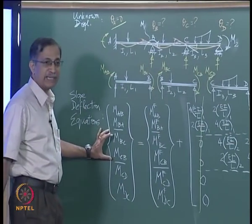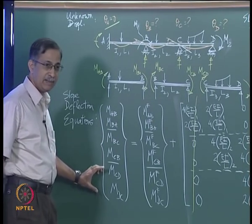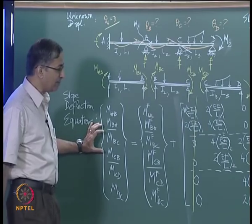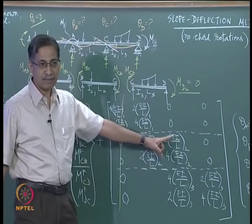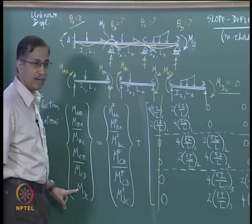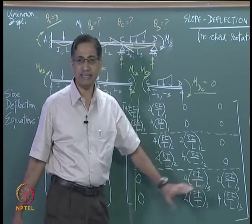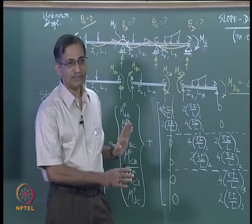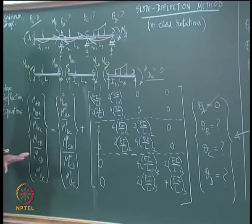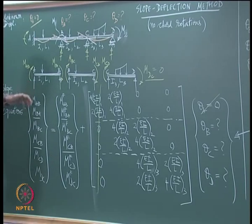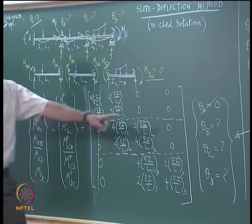Similarly, you can write for the other segments BC and CD. For segment BC, you have dependence only on theta B and theta C — the second and third columns. For segment CD, you have dependence only on theta C and theta D — the third and fourth columns. With the help of these slope deflection equations, you can find the end moments and thereby draw the bending moment diagram and shear force diagram, provided you know these unknown rotations.